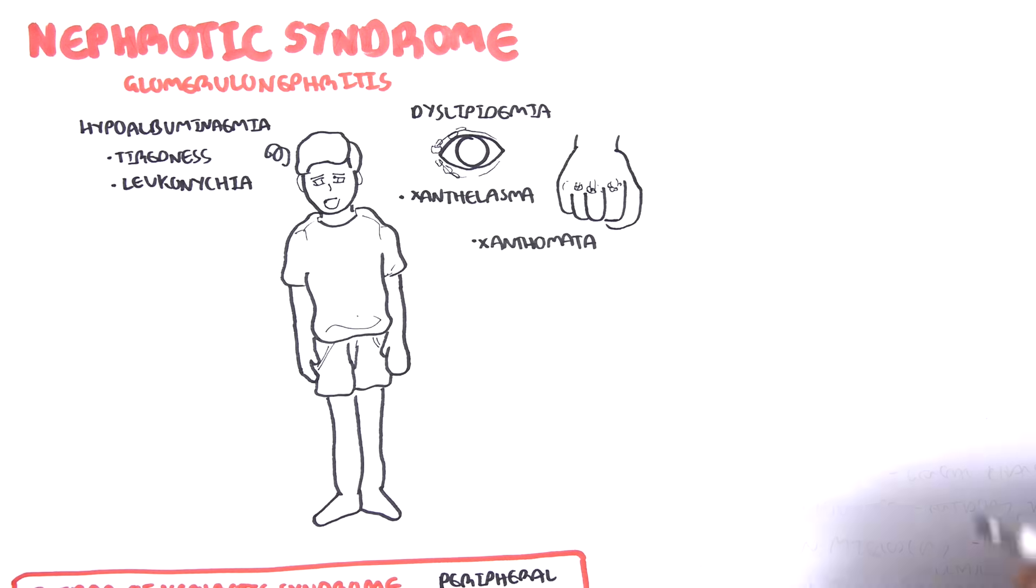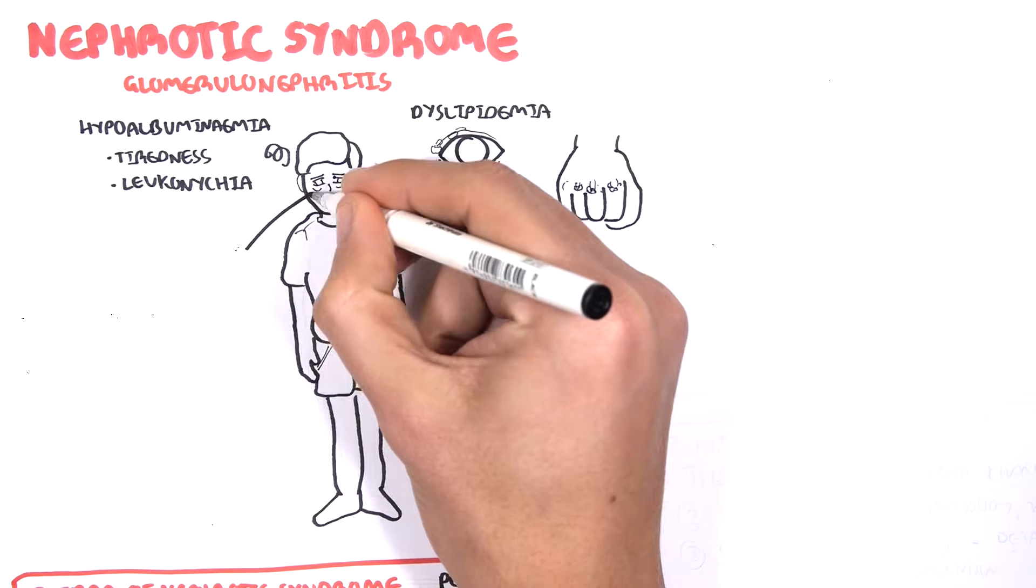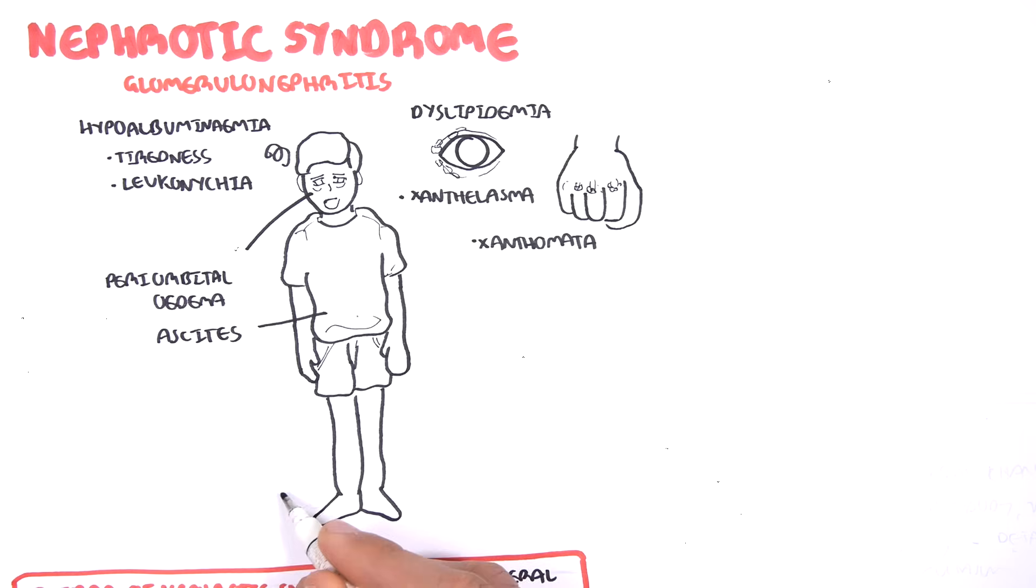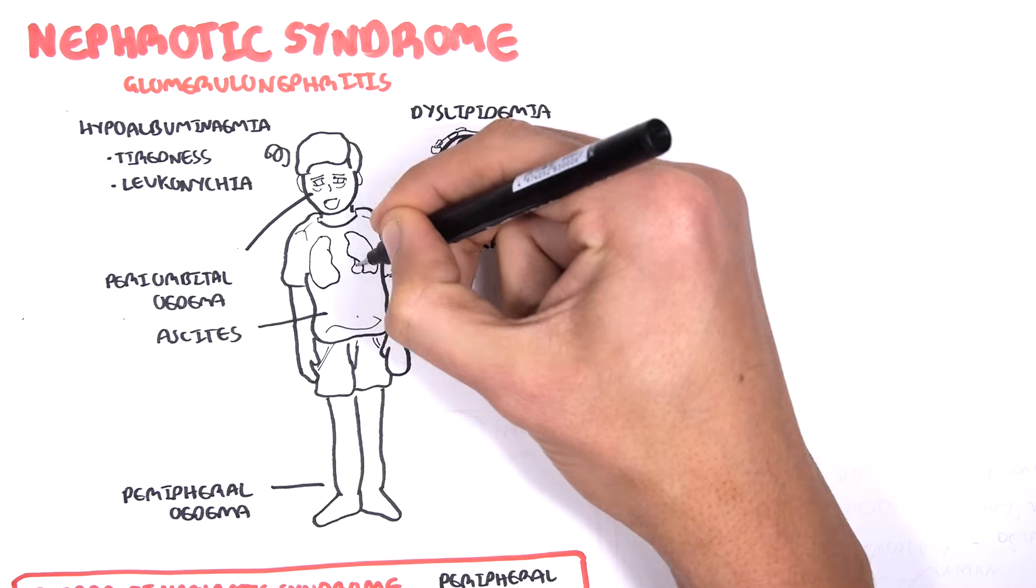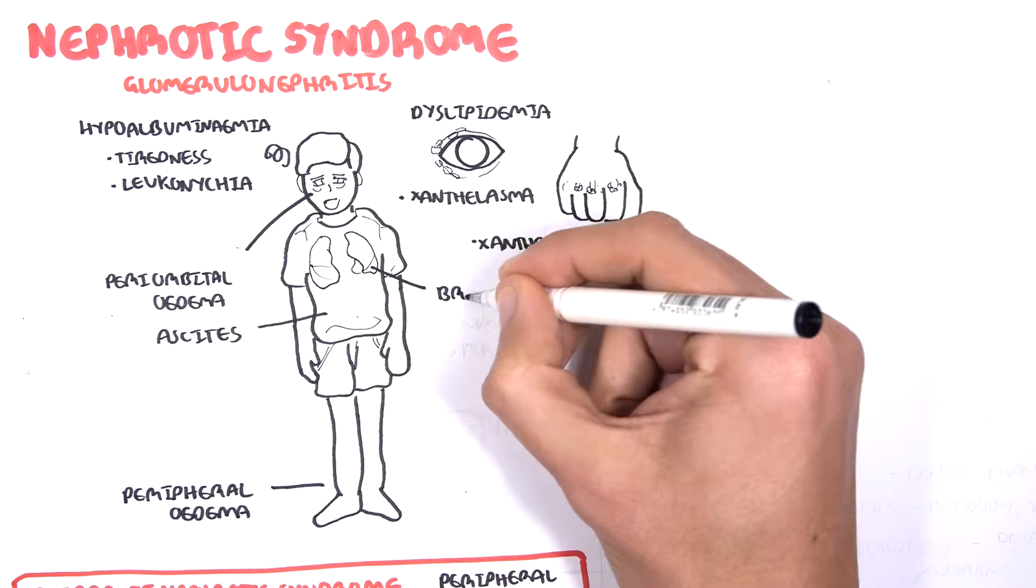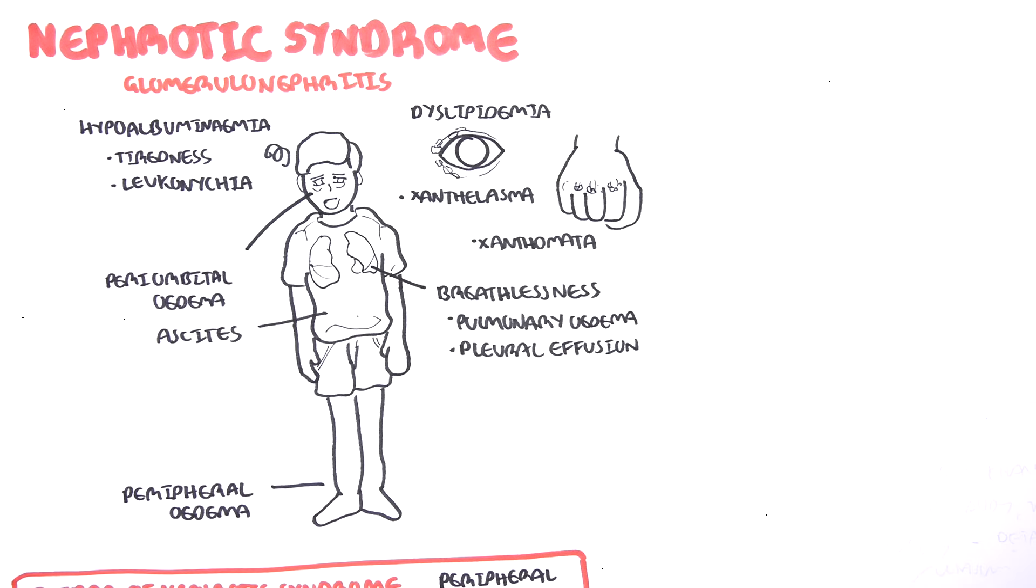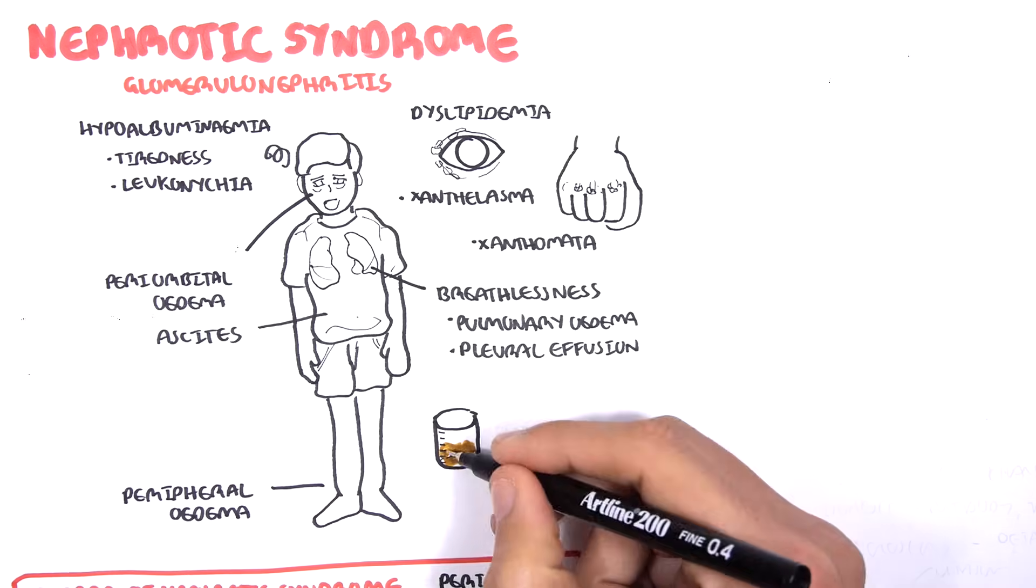Hypoalbuminemia also results in edema because of reduced oncotic pressure. Edema can be periorbital edema, which is fluid around the eye, ascites or fluid in the abdomen, and peripheral edema of the lower limb. Patients can be breathless because of fluid overload or pleural effusion. Urine in nephrotic syndrome is often described as being frothy in appearance.